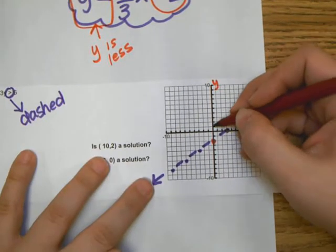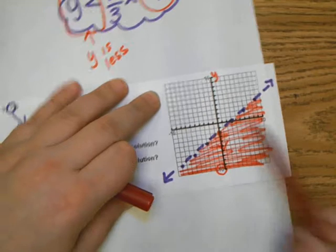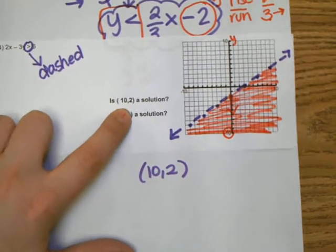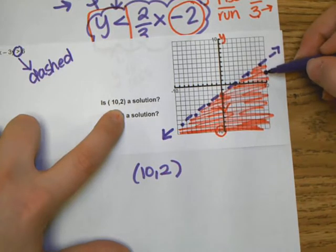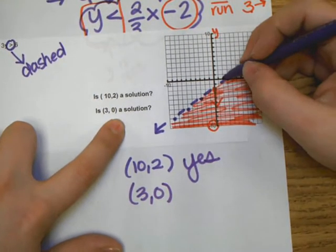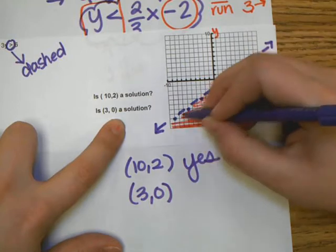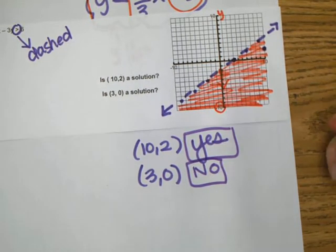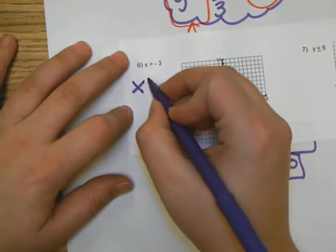To shade, read the equation where y is by itself: y is less than. So we shade where y values are less — below the line. To check: is 10, 2 a solution? Going over to 10 and up 2, it's in the shaded region — yes, it's a solution. How about 3, 0? It's right on the line, but the line is dashed, so the dashed line means those points cannot be solutions — so no.